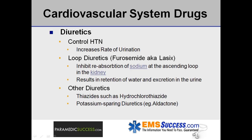Diuretics control high blood pressure by increasing the rate of urination. Loop diuretics, such as furosemide, also known as Lasix, do this by inhibiting the body's ability to reabsorb sodium at the ascending loop in the kidney, resulting in retention and excretion of water in the urine. Other diuretics include thiazides such as hydrochlorothiazide, as well as potassium-sparing diuretics such as aldactone.